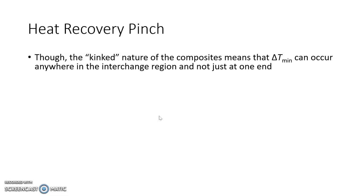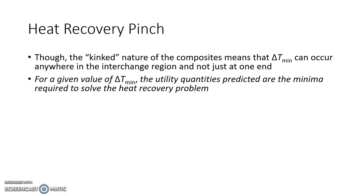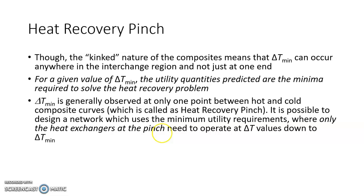So pinch may occur anywhere in the diagram. For a given value of delta T minimum, the utility quantities predicted are the minimum required to solve the heat recovery problem. So once you have identified that there is a pinch, on one side you will find minimum hot utility requirement, on the other side you will find minimum cold utility requirements. Delta T minimum is generally observed only at one point between hot and cold composite curves. This is in general called as a heat recovery pinch. It is possible to design a network which uses the minimum utility requirements where only the heat exchanger at pinch need to operate at a delta T value down to delta T minimum.